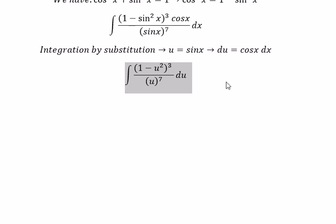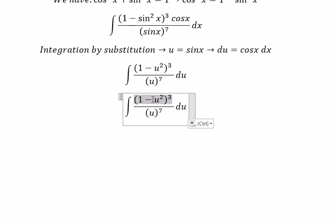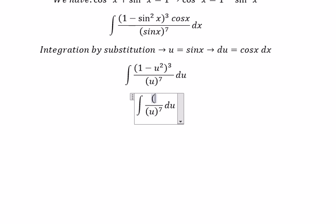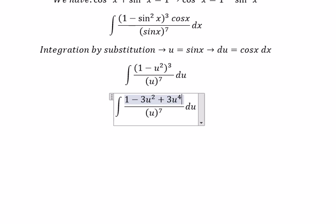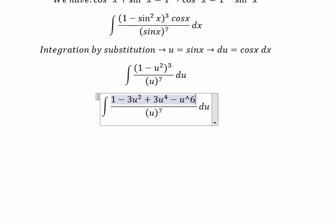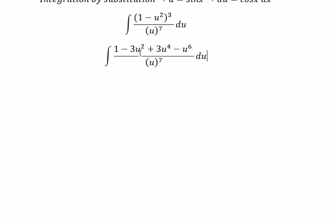Next we expand (1 minus u squared) to the power of 3. We get 1 minus 3u squared plus 3u to the power of 4 minus u to the power of 6. Now we need to divide everything by u to the power of 7.